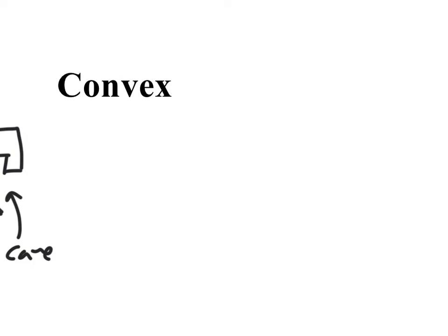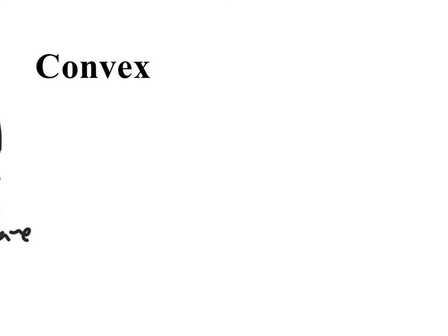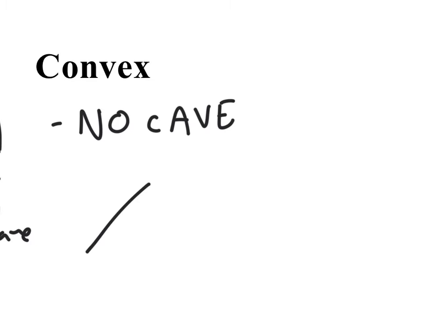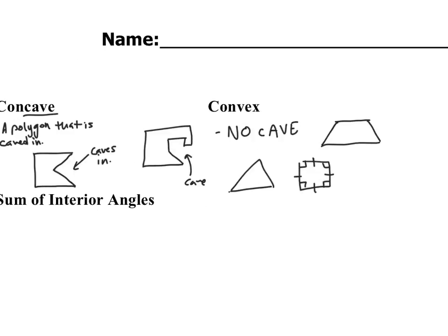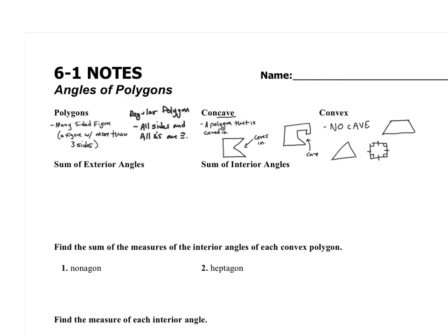That leaves us with convex. We'll primarily be dealing with convex polygons. Convex means there's no cave. So a triangle would be a convex polygon, a square would be a convex polygon, a trapezoid would be a convex polygon — there's no caving in. Even though it may look like you have some small angles, they don't cave in. We'll primarily be dealing with convex polygons, but we have some interesting formulas for the angles of a polygon.